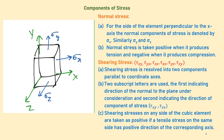The normal stress is taken as positive when it produces tension, and negative when it produces compression. So if a normal stress is trying to expand this cube, it is taken as positive. If the cube is getting compressed by some stress, then that normal stress is negative.